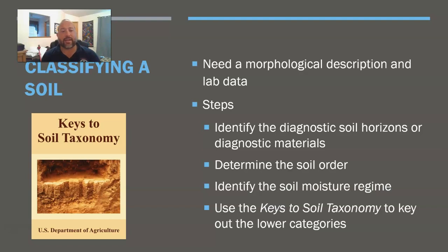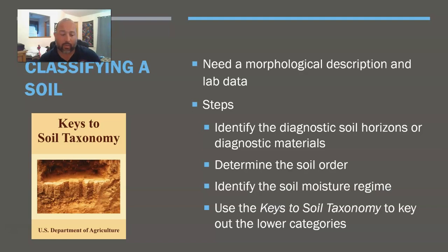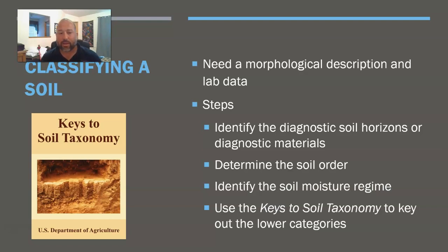So how do you actually classify a soil? You're going to need a morphological description, which we learned how to do earlier. You'll probably need some lab data. Then you try to identify the diagnostic soil horizon. If we figure out that diagnostic soil horizon, that gets us down to 1 out of 12. Once we figure out that diagnostic horizon, we'll determine our soil order, then figure out our soil moisture regime, which gives us our suborder. Then we use the Keys to Soil Taxonomy to key out the lower categories — great group, subgroup, family, and series.